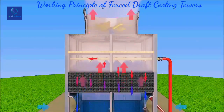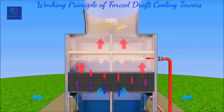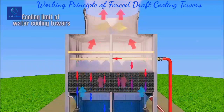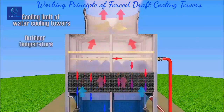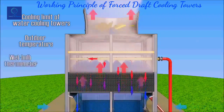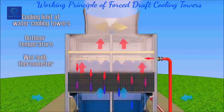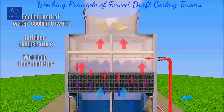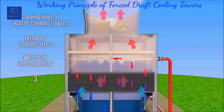Theoretically, assuming ideal conditions with no work losses in converting water to steam, the cooling limit in a cooling tower is the outside air wet bulb temperature. In practice, the limit of cooling is the wet bulb temperature plus 3 degrees Celsius.